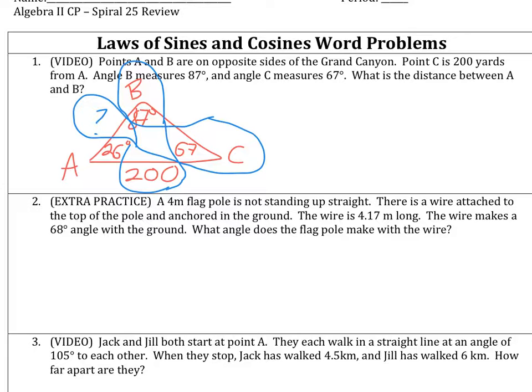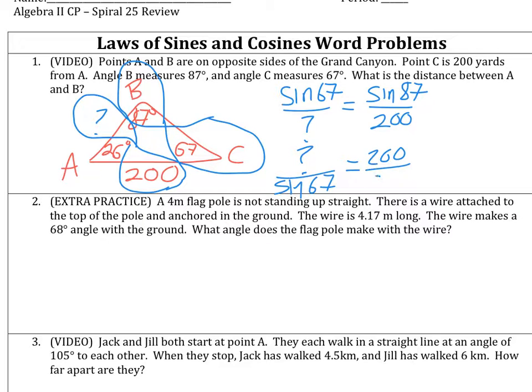So let's set this up. For my C stuff, that's going to be sine of 67 over question mark is equal to sine of 87 over 200. I kind of like flipping these things to get the variable on top, so I might write this as question mark over sine 67 is equal to 200 over sine 87.